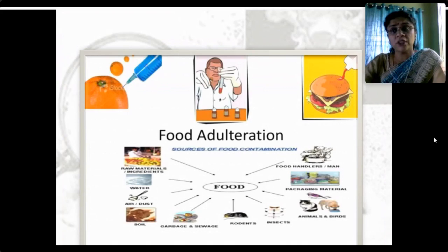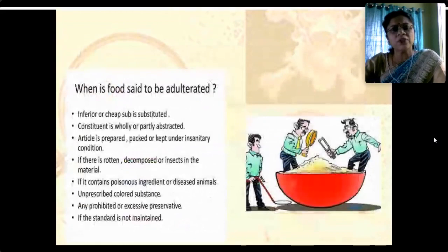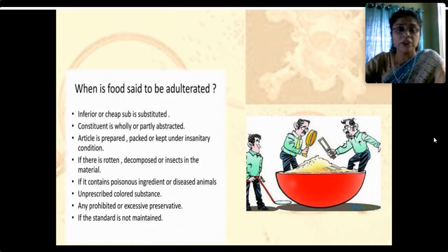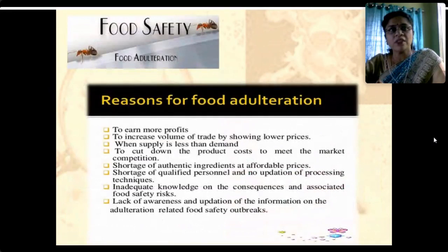Wrong storage and wrong temperature are major concerns. Each different type of food requires a different temperature. Food is said to be adulterated when an inferior or cheap substance is substituted, constituents are wholly or partly abstracted, the article is prepared or packed under insanitary conditions, or there is rotten, decomposed or insect-infested material present. If the standard of food is not maintained, that is also very important to note.